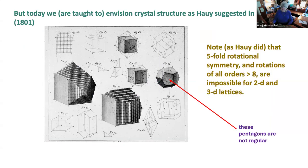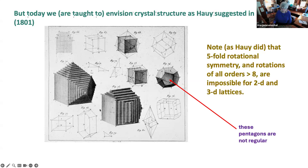But today we're taught to envision crystal structure as Haüy suggested in 1801: that crystals should be thought of as little bricks stacked up to make the outer shapes, stacked in a lattice configuration by translation. This resolved the problem of how crystals of the same material could have different shapes — he showed that if you build them this way, you can finish the stacks off in various different ways, producing different outer forms.